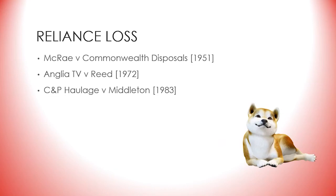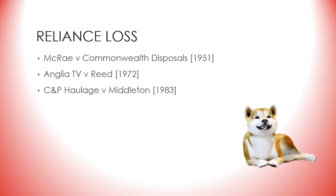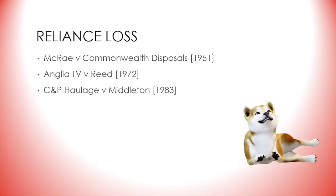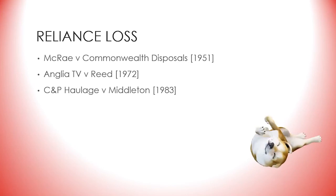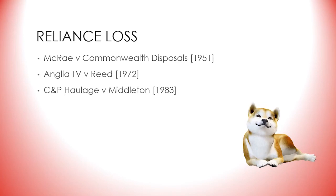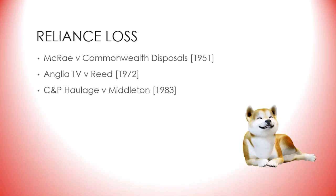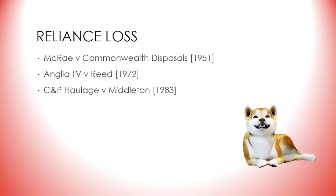It is possible to claim for both pre- and post-contractual expenditure depending on the circumstances. In Anglia TV v Reed from 1972, it was held that wrongful repudiation of a contract allowed the aggrieved party to claim, by way of damages, not only expenses incurred after the contract but also pre-contractual expenditure within the reasonable contemplation of the parties. In that case, a well-known actor contracted to appear for Anglia Television to play the lead in a play they were producing, but shortly afterwards wrongly repudiated the contract, forcing Anglia Television to abandon the production. The court found that the plaintiffs could claim expenditure incurred before the contract, provided it was reasonably in the contemplation of the parties as likely to be wasted if the contract were broken.